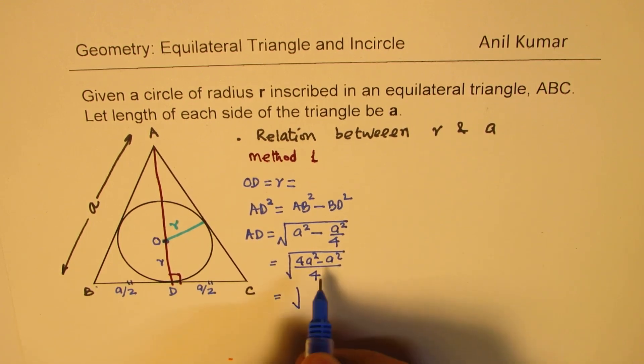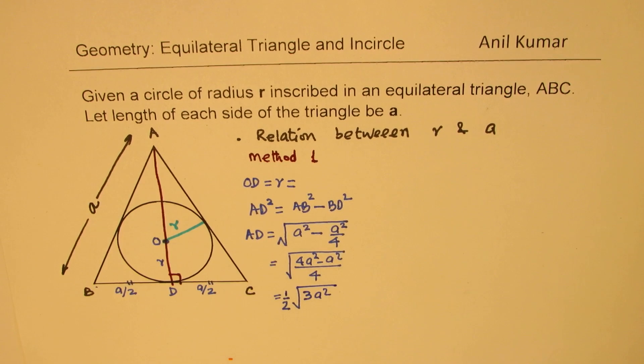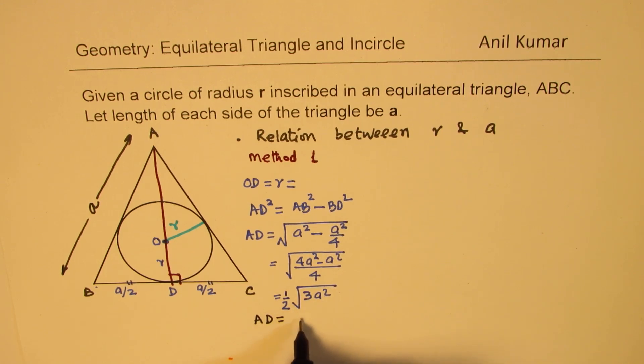And so we get square root of, we can take this 4 outside, we can write this as half, and here we get 3, 4 minus 1 is 3, 3a squared. And that gives you AD as equal to, a squared square root is a, so we get square root 3 over 2a. So we get the height, so normally we say AD is the height of your triangle. So we get height of the triangle as square root 3 over 2a.